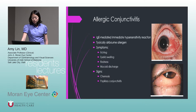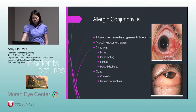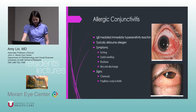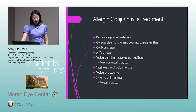Allergic conjunctivitis is very common. It's an IgE-mediated hypersensitivity reaction, typically to something airborne — pollen, weeds, something in the environment — and usually seasonal. Symptoms are itching, swelling, redness, and a mucoid discharge. You can also see chemosis, but the most common finding is going to be a papillary conjunctivitis.